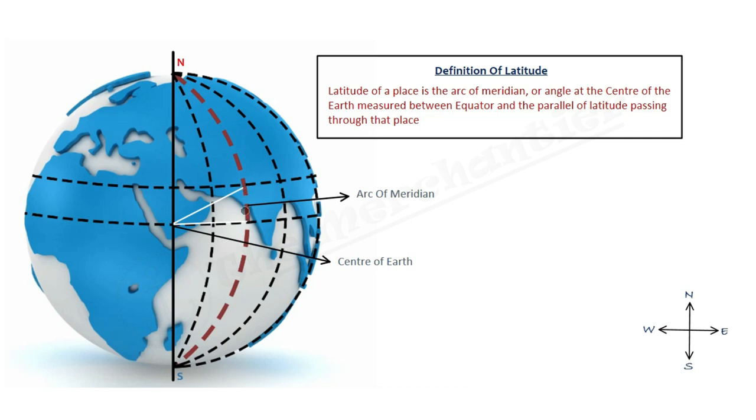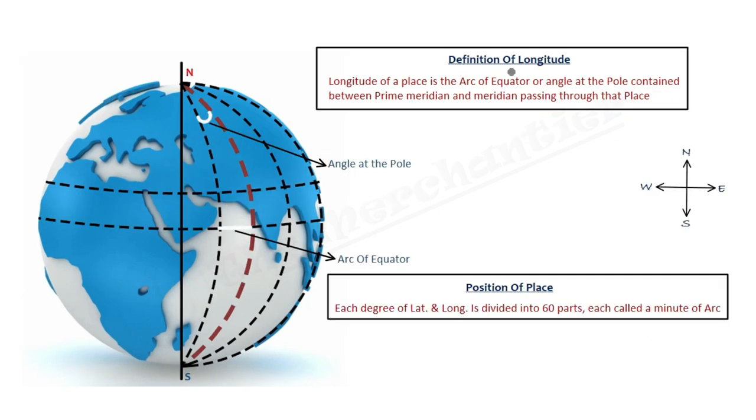So that will be latitude of that place. Either we find the angle or we find the arc of meridian; in both situations, that will be the latitude of that place. Now coming to definition of longitude.